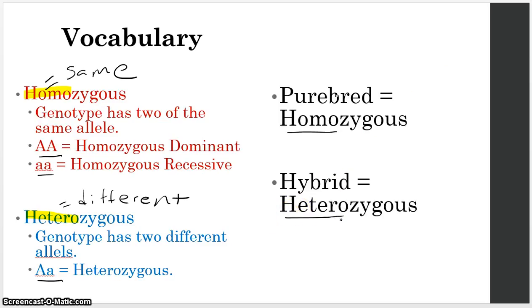So if you hear somebody in your homework that says that somebody is purebred for the dominant trait, well, that means that they have this over here. They're purebred dominant. Or if you hear somebody say that they're purebred recessive, that means that they have this one down here, that they're double recessive.